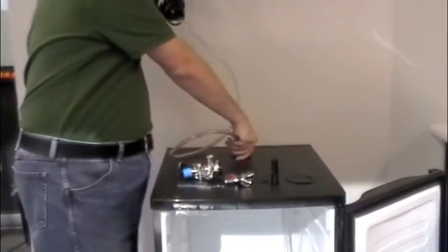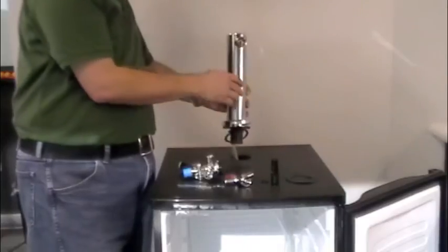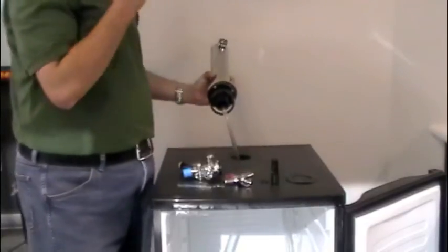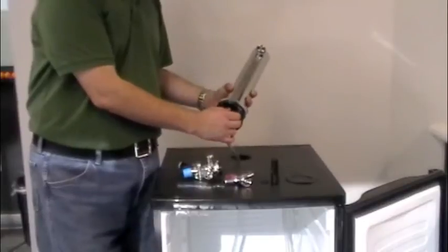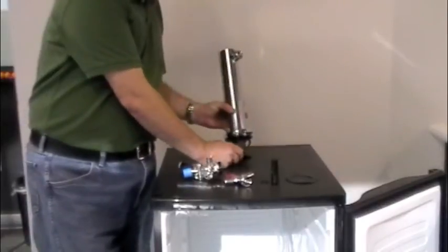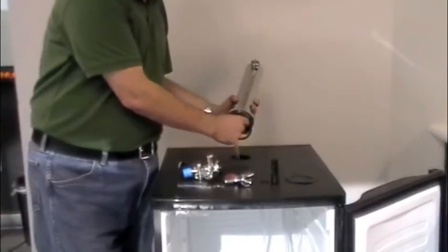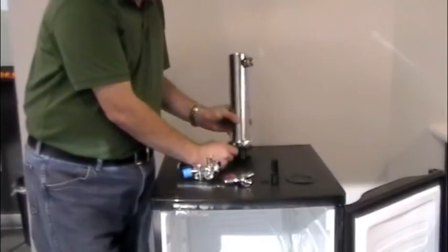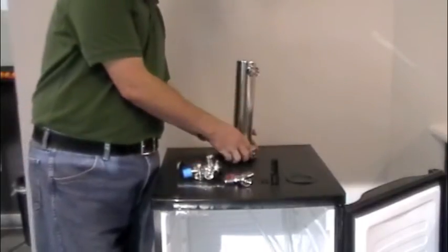So we're going to drop our line in first and then, and by the way, again, these have flanges so you'll match up the open flange inside with what's here at the bottom of the tower. Now remember I told you about your gasket.